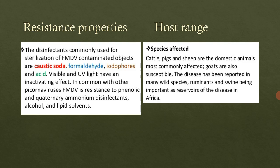Now we will look at the resistance properties of the FMD virus. The disinfectants used to inactivate this virus are caustic soda, formaldehyde, iodophores, and acid. Visible light and UV light also have an inactivating effect on this virus — these represent its susceptibilities. The virus is resistant to phenolic and quaternary ammonium disinfectants, as well as alcohol and lipid solvents.